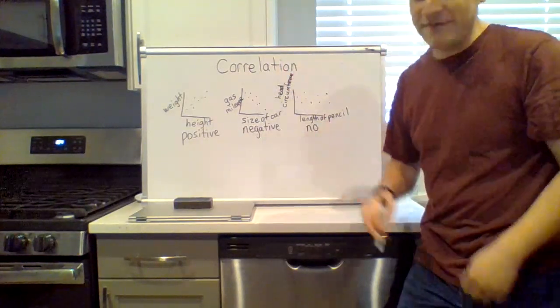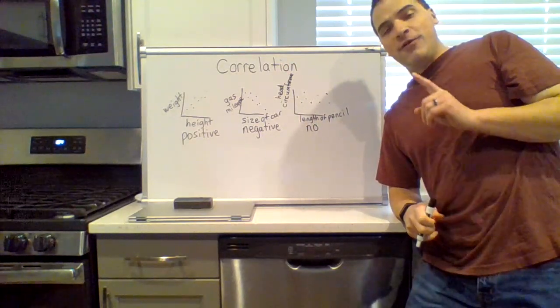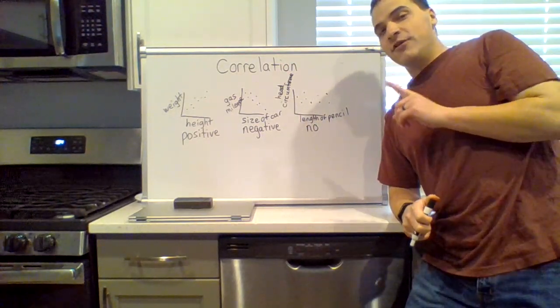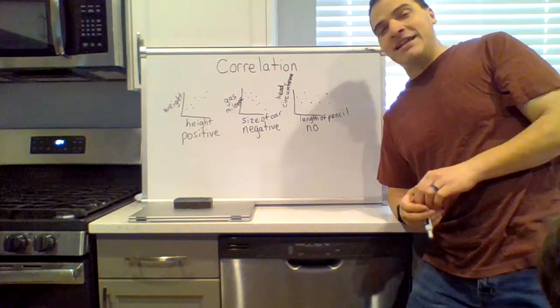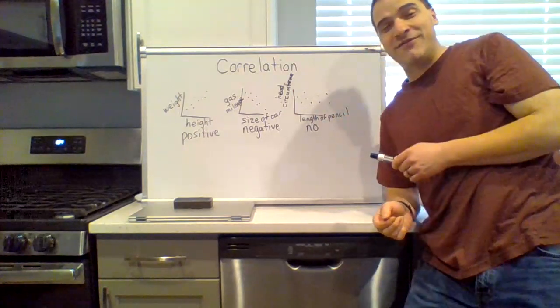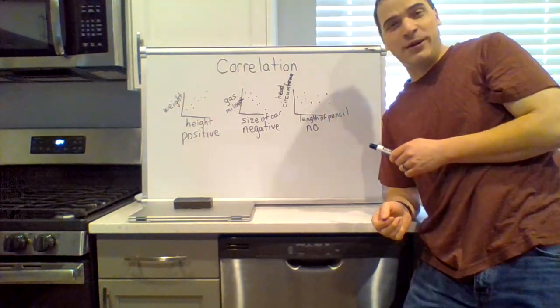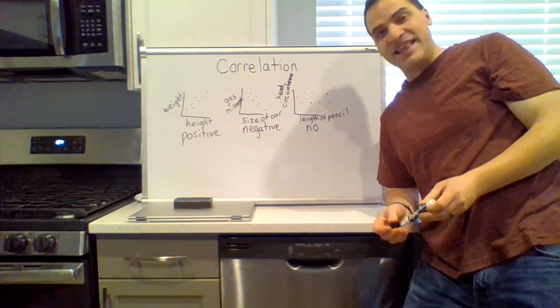Now be careful in statistics. First, you need to have a large sample size. I actually have a class of like eight students, measured their length of pencil and head circumference, and actually found a positive correlation. That was weird. But also another key factor in statistics is that correlation is not causation.